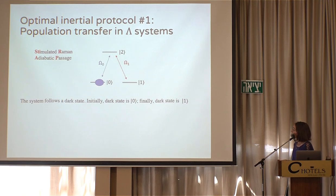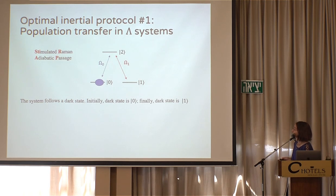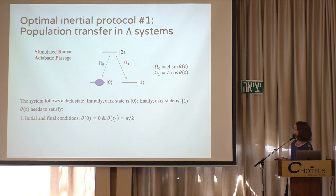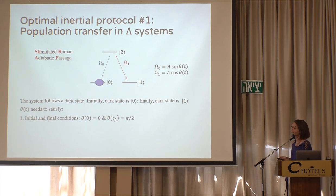The protocol works as follows. Initially, state zero is the dark state. We initialize the system there. At the end, state one will be the dark state. To do that, we first apply field omega-1, making zero the dark state, then gradually shut off omega-1, turn on omega-0, and the system reaches state one. We parameterize the fields as sine and cosine of some angle theta, needing theta to go from zero to pi/2. In order to be adiabatic, the derivative of theta must be small; for inertial evolution, only the second-order derivative of theta needs to be small.